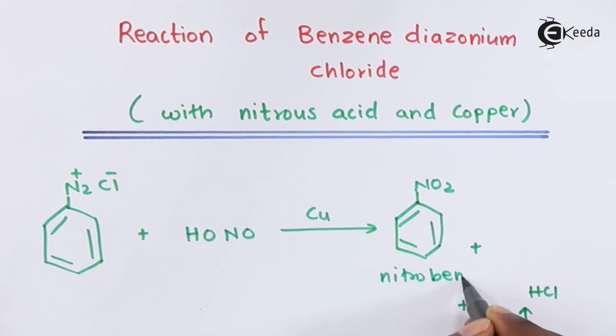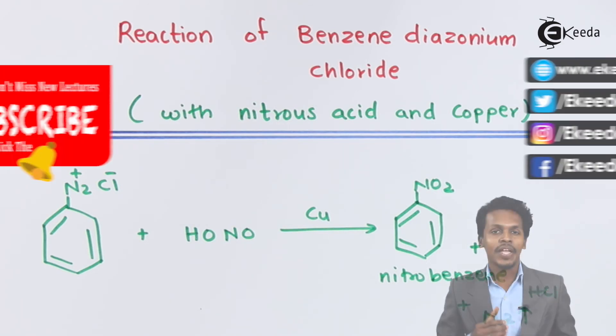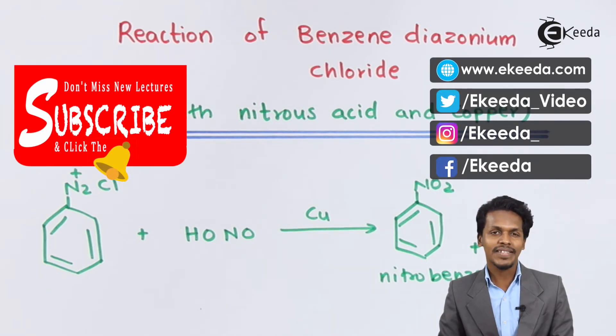This is nitrobenzene, what we get when we do a reaction of benzene diazonium chloride with nitrous acid. Thank you friends for watching this video. I hope to see you next time. Don't forget to subscribe to the Ekeda channel.